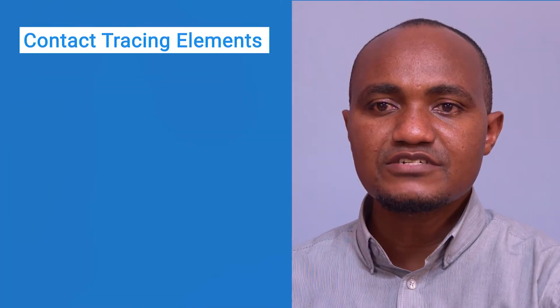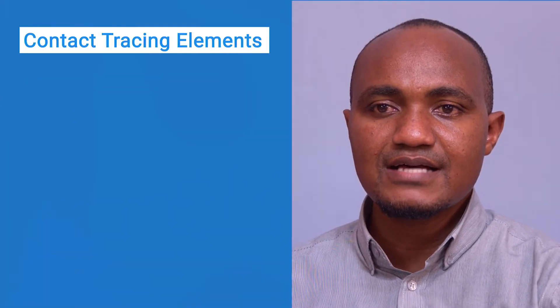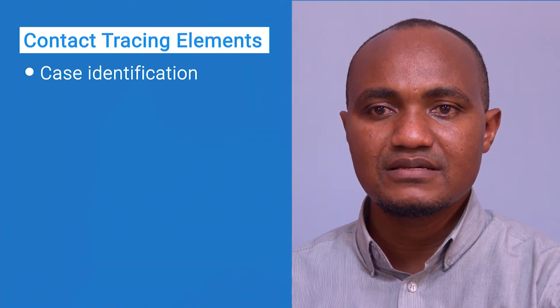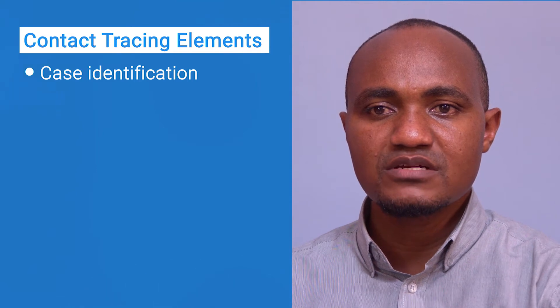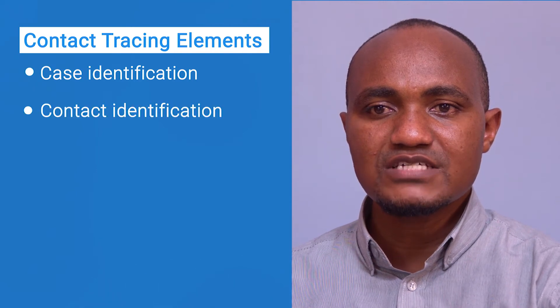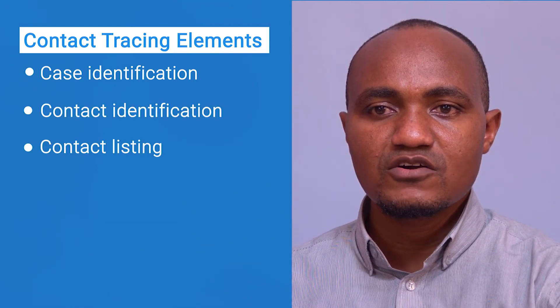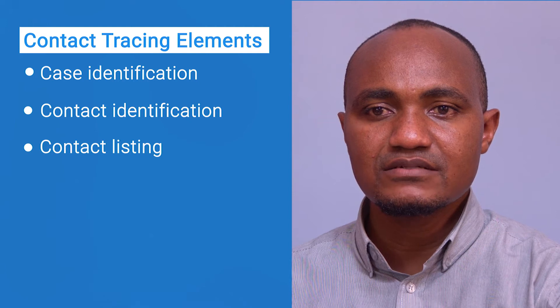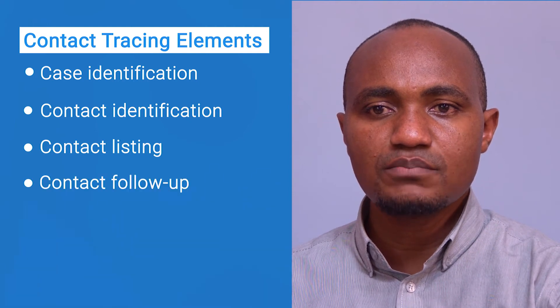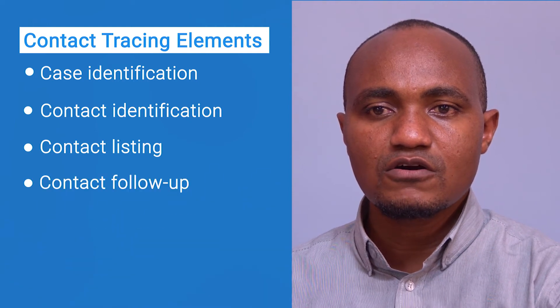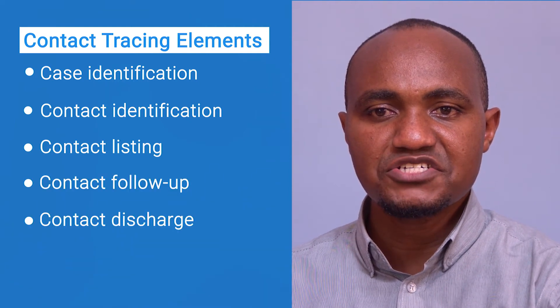How is contact tracing carried out? Contact tracing has the following basic elements: case identification, contact identification, contact listing, contact follow-up, and contact discharge.